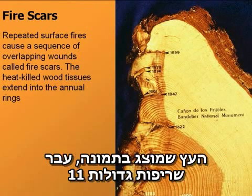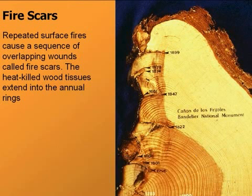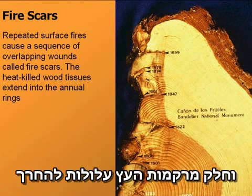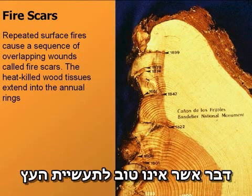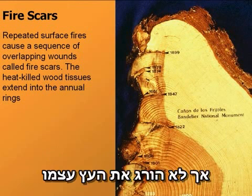This particular tree in the photo went through 11 major fires. Certain wood tissues can be burned, which isn't so good for lumber or timber production, but doesn't kill the tree.